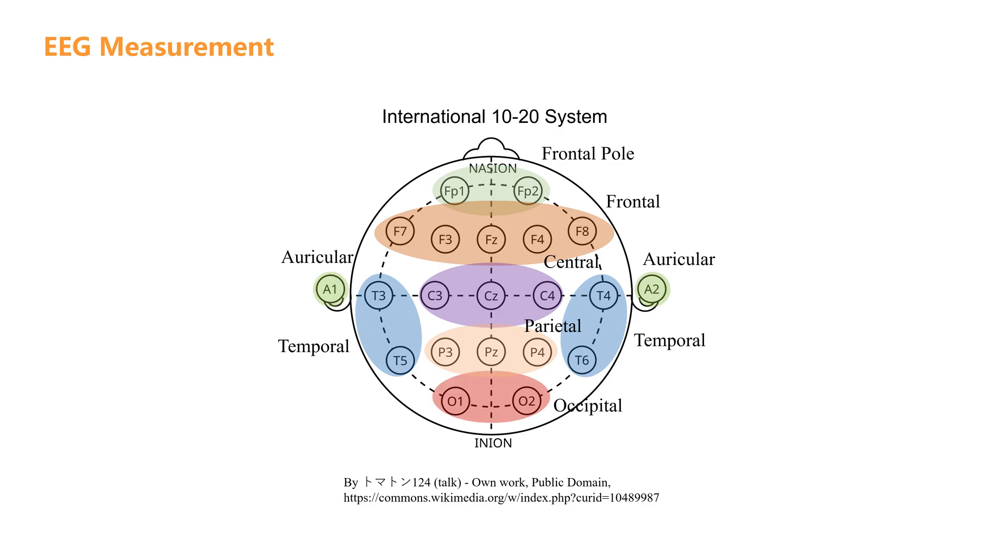A represents auricular. In addition, the numbers indicate position. Odd numbers are on the left hemisphere, even numbers on the right hemisphere, and Z represents the central midline region.